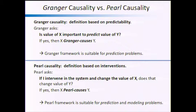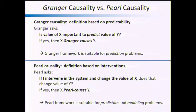This may be my most important slide: what is Granger causality versus Pearl causality? Granger causality is defined based on predictability. Basically, what Granger asks is: is the value of x important to predict the value of y? You have your observed data set, you usually do regression, you look at your regression coefficients, and you figure out if x is important to predict y. If that is the case, then you say x Granger-causes y. It's totally based on predictability.